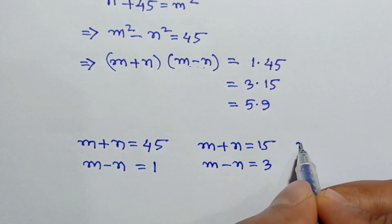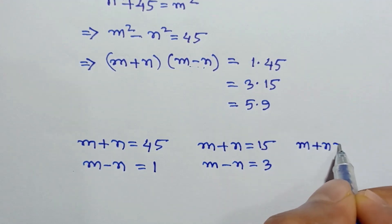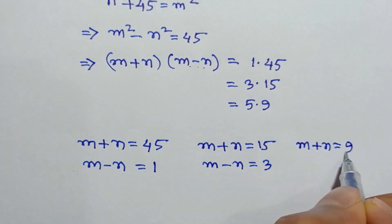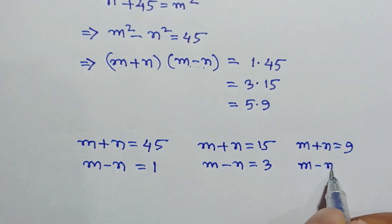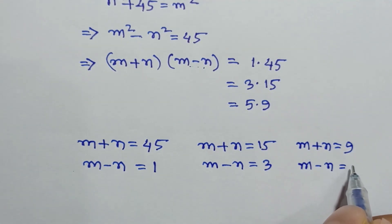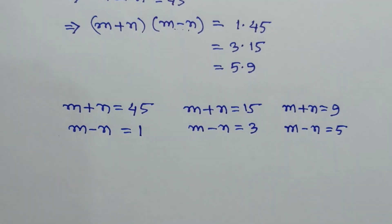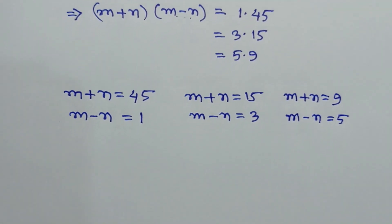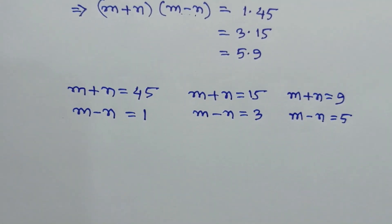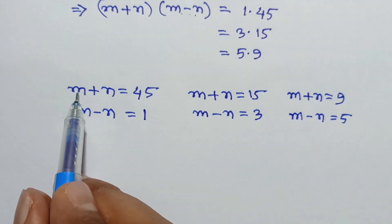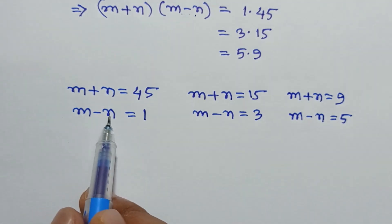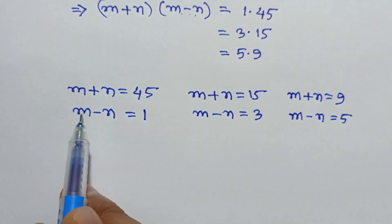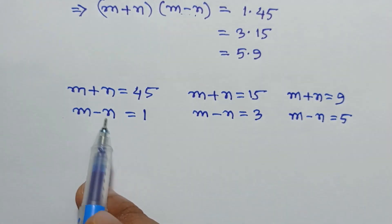And from 5 times 9, m plus n is equal to 9 and m minus n is equal to 5.